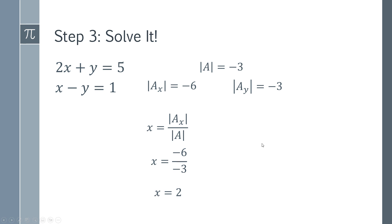Then we do the same thing for Y using the rule. Y is the determinant of AY divided by the determinant of A. Substitute those numbers in and we get 1. Good practice would be to take these numbers, 2 and 1, and substitute back in. 2 times 2 plus 1 is indeed 5, and 2 minus 1 is 1. This is a valid set of solutions.